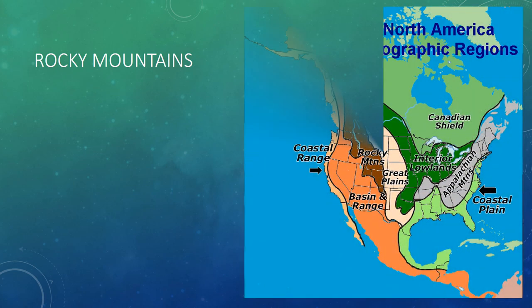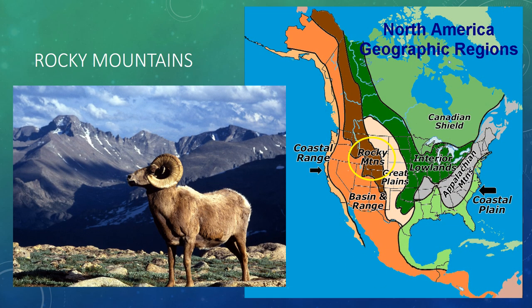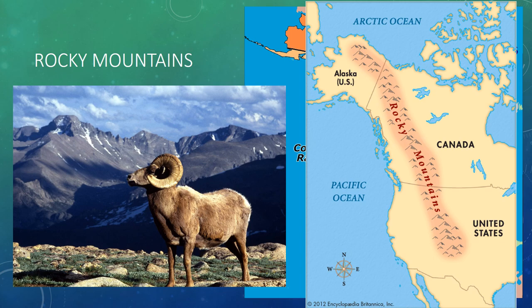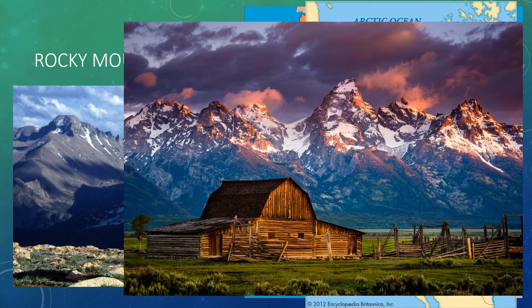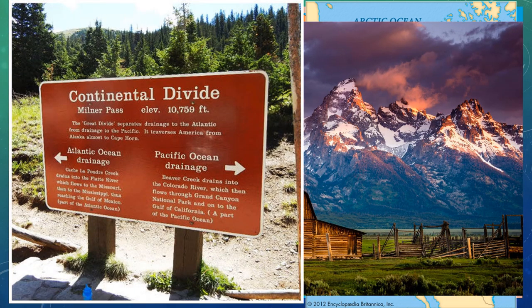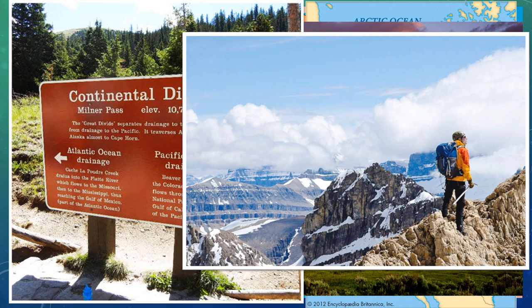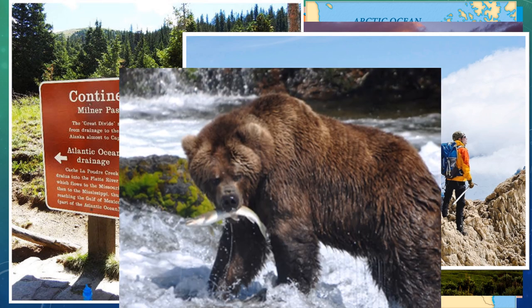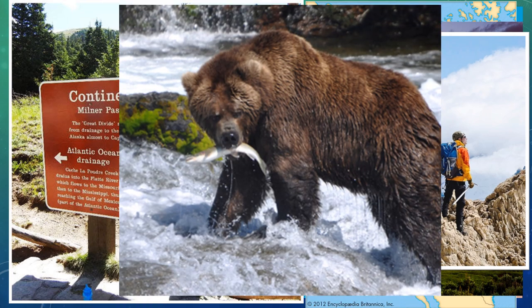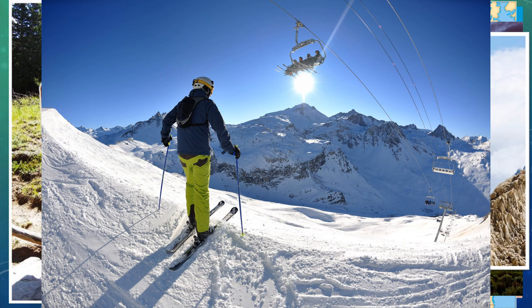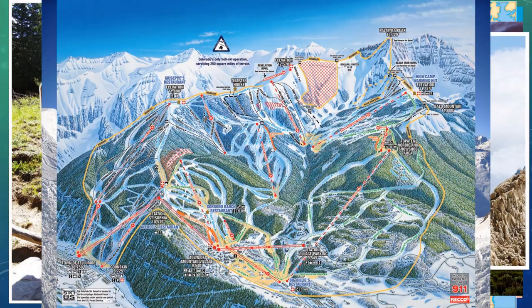The Rocky Mountains are located west of the Great Plains. These rugged mountains are home to the bighorn sheep and stretch from Alaska almost to Mexico. A jagged series of snow-capped peaks, these mountains don't have trees growing on their summits. Home to the Continental Divide, the Rocky Mountains are for experienced mountain climbers — be careful not to run into a grizzly bear! Winter sports are also a huge draw to visitors from all over the country; check out one of these Colorado ski resorts!